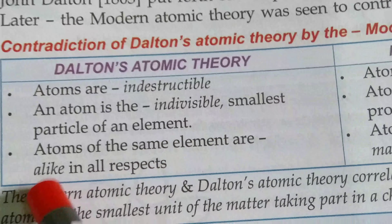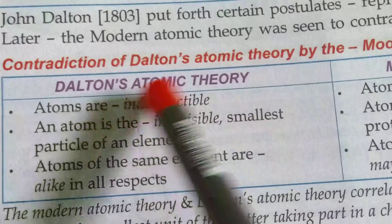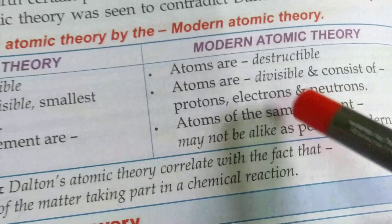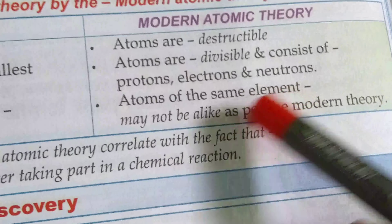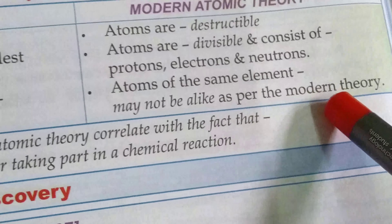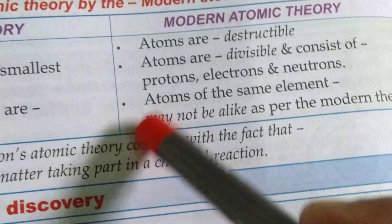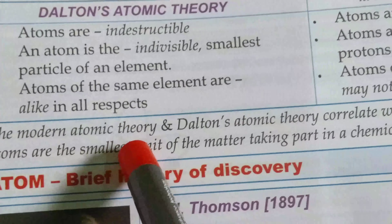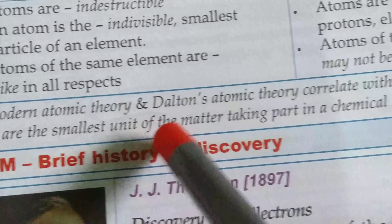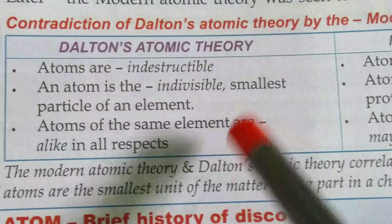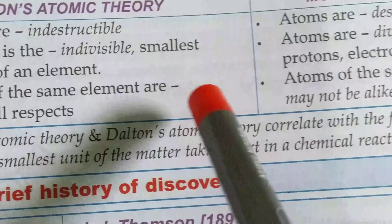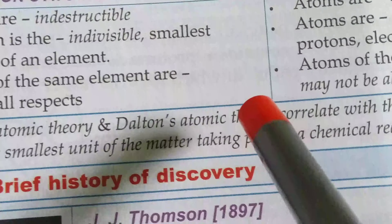Atoms of the same element are alike in all respects according to Dalton's theory — every atom of an element is similar to another. But in case of modern atomic theory, atoms of the same element may not be alike. Both modern atomic theory and Dalton's atomic theory agree that atoms are the smallest unit of matter taking part in a chemical reaction.